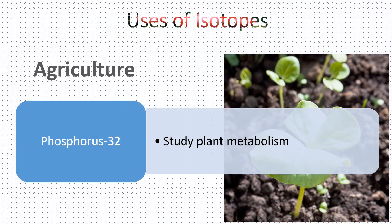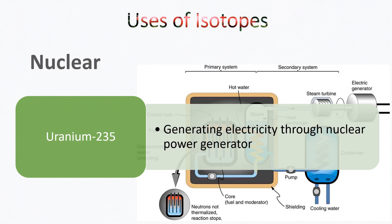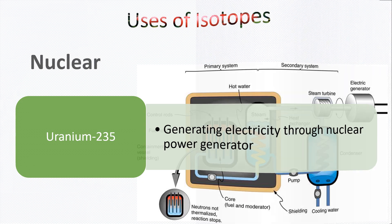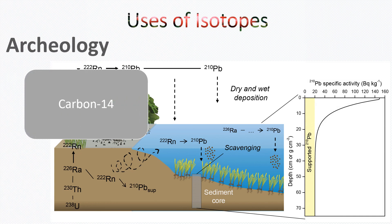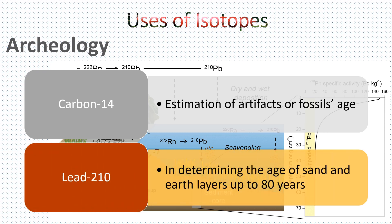In agriculture, phosphorus-32 is used to study metabolism in plants. In the nuclear field, uranium-235 is used in generating electricity through nuclear power generators. In archaeology, carbon-14 is used to estimate the age of artifacts or fossils, and lead-210 is used in determining the age of sand and earth layers up to 80 years.